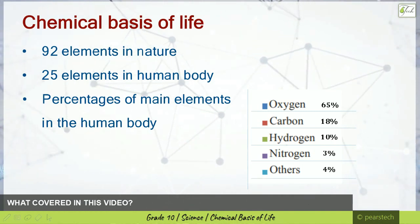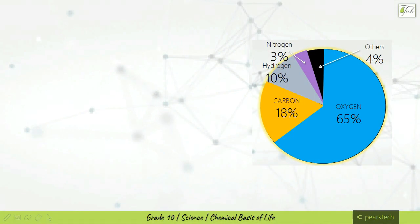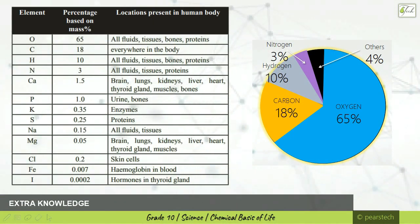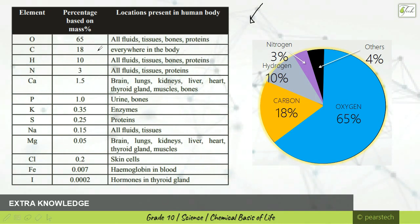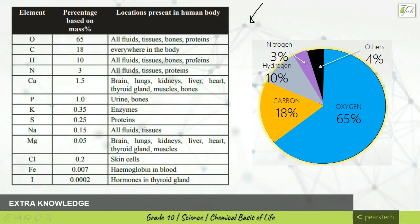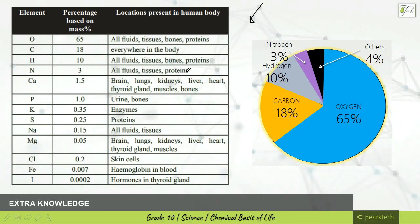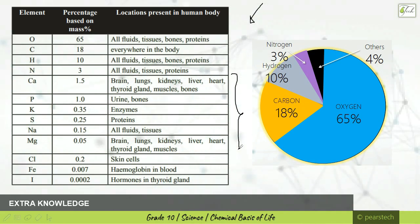There is also an interesting chart in your booklet showing the locations where these elements are present in the human body. The 65% oxygen is found in all fluids, tissues, bones, and proteins. Carbon at 18% is everywhere in the body. Hydrogen is in all fluids, tissues, bones, and proteins. Nitrogen at 3% is in all fluids, tissues, and proteins — but not bones. You can find the rest of the 4% from your book chart. That's all for today, take care, bye-bye.